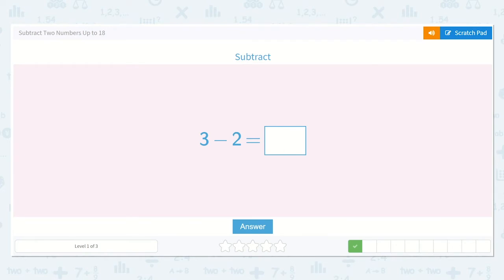Next we have 3 minus 2. So if I have 3: 1, 2, 3, and I take 2 of them away, how many will I have? Let's see. 1, 2. I have 1 left.